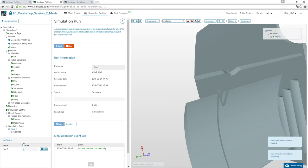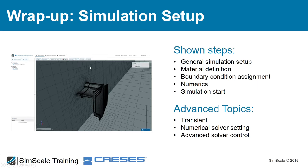Since the simulation can take up to one hour, let's do a wrap-up then look at pre-computed results. Summary: select the correct simulation type — incompressible fluid dynamics, turbulent, steady-state. When you know the physical effects occurring, SimScale's project tree guides you to the right setup. We defined material, assigned it to the mesh, set boundary conditions, and configured numerics. Advanced topics include transient simulations and numerical solver control for improved quality.